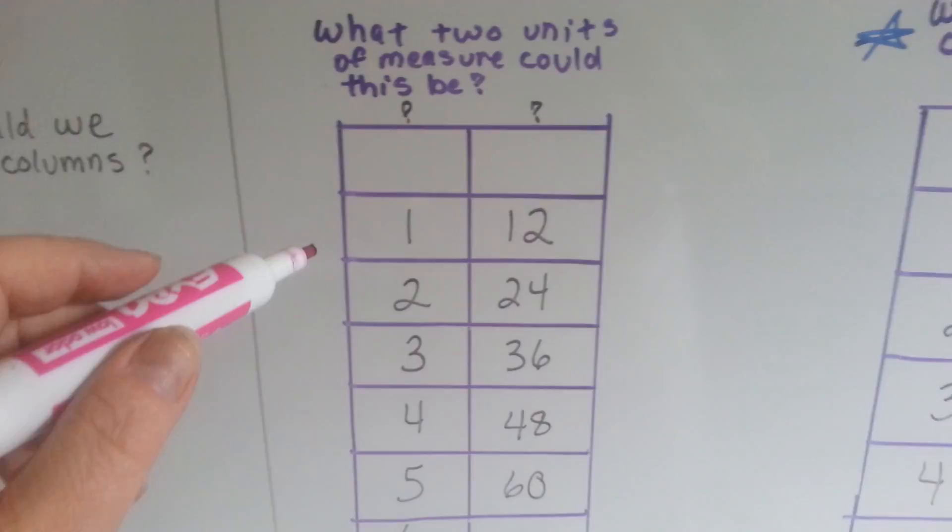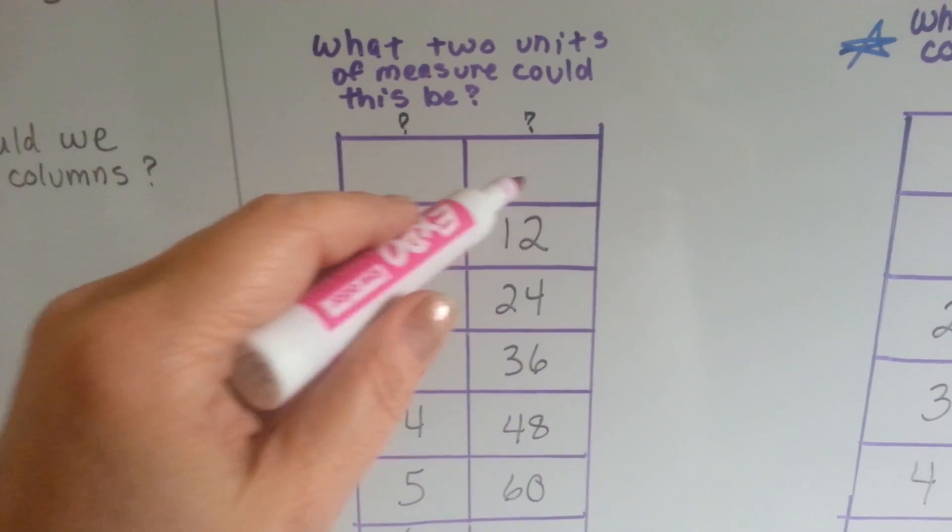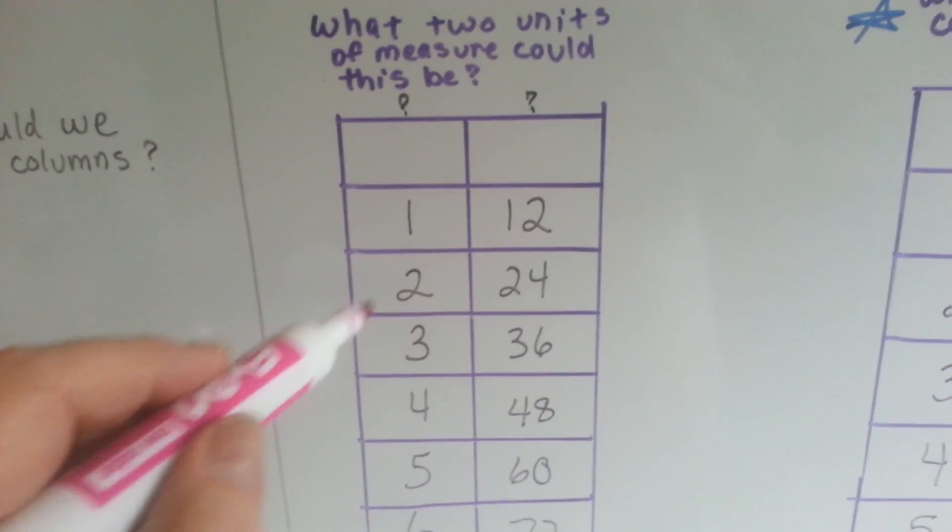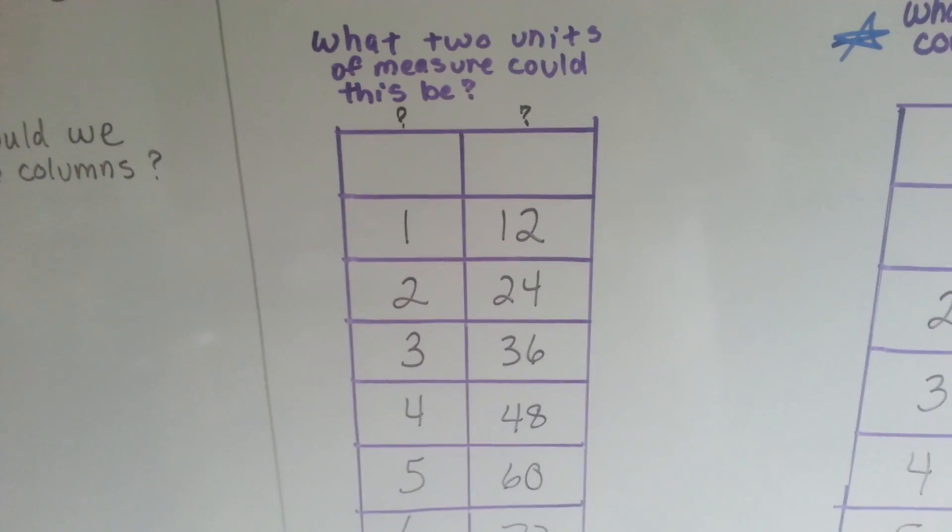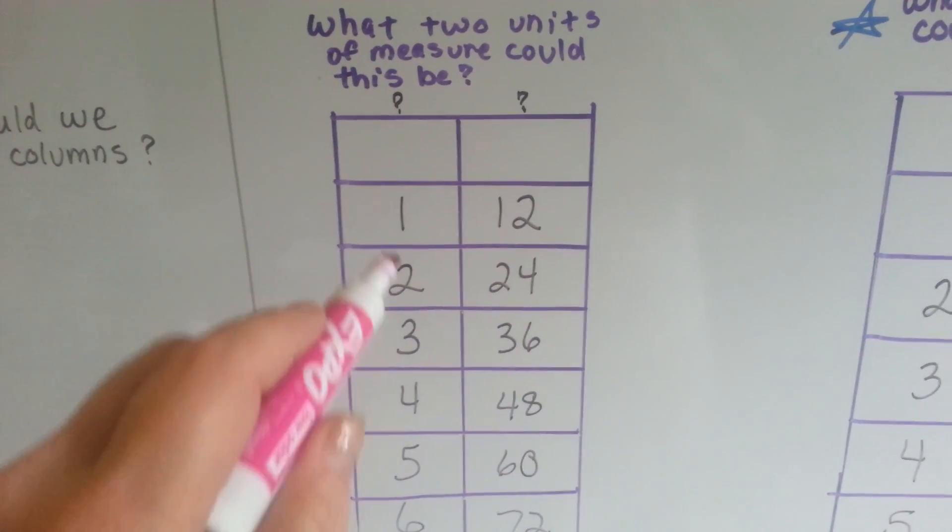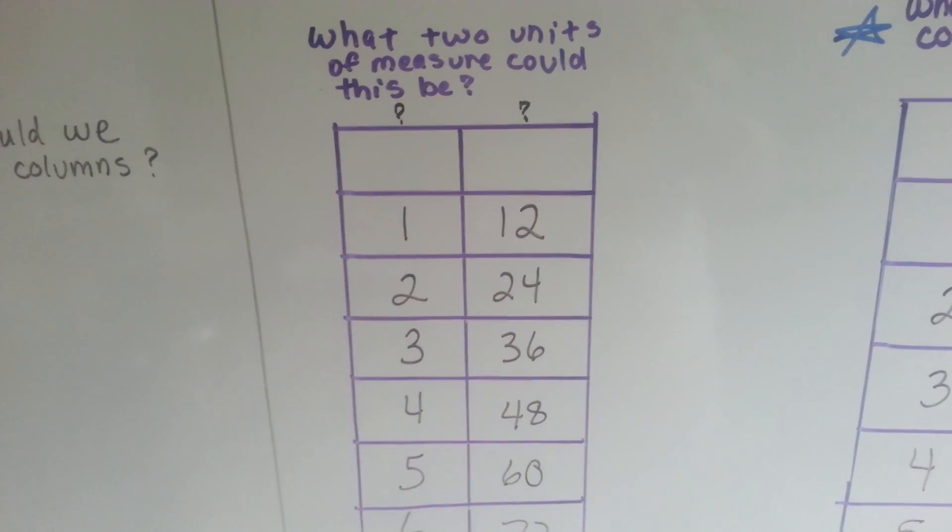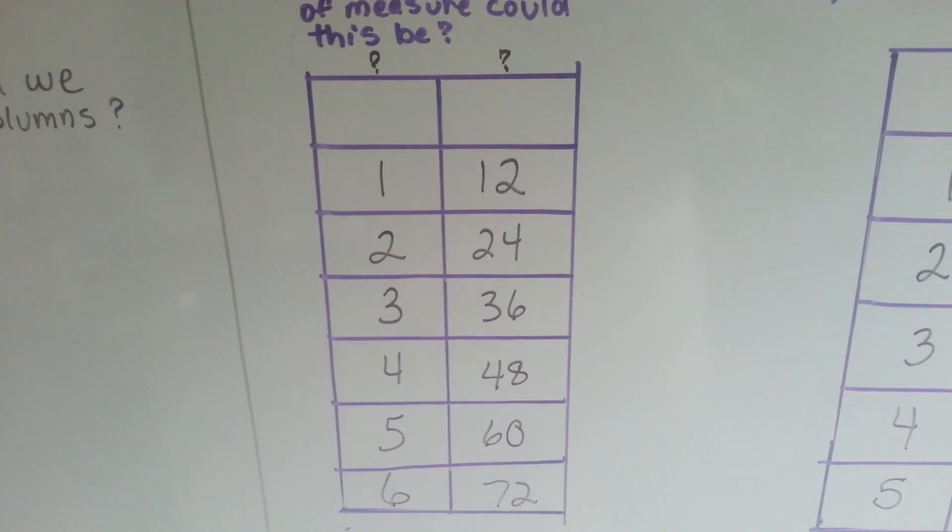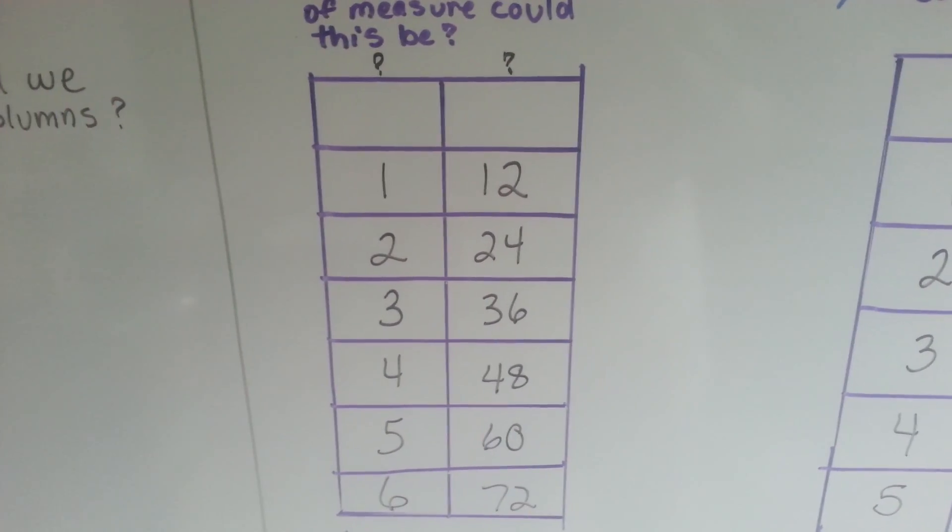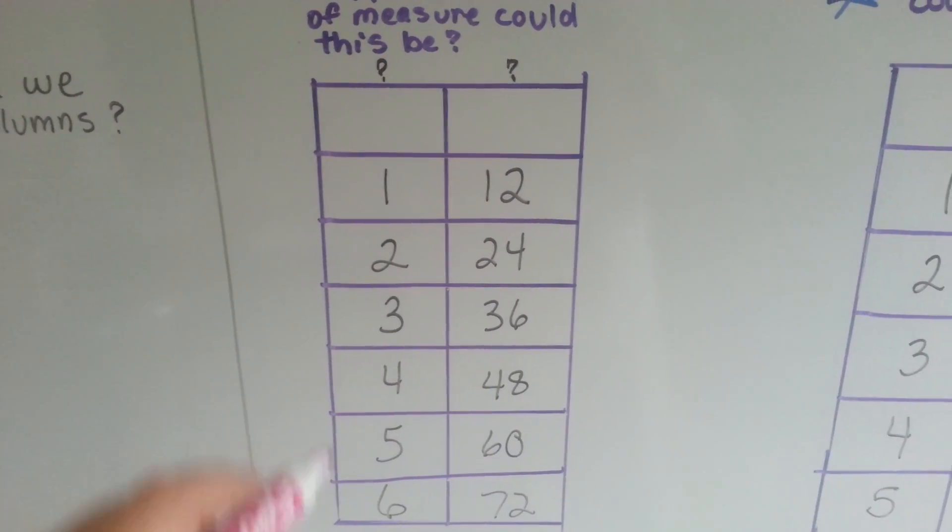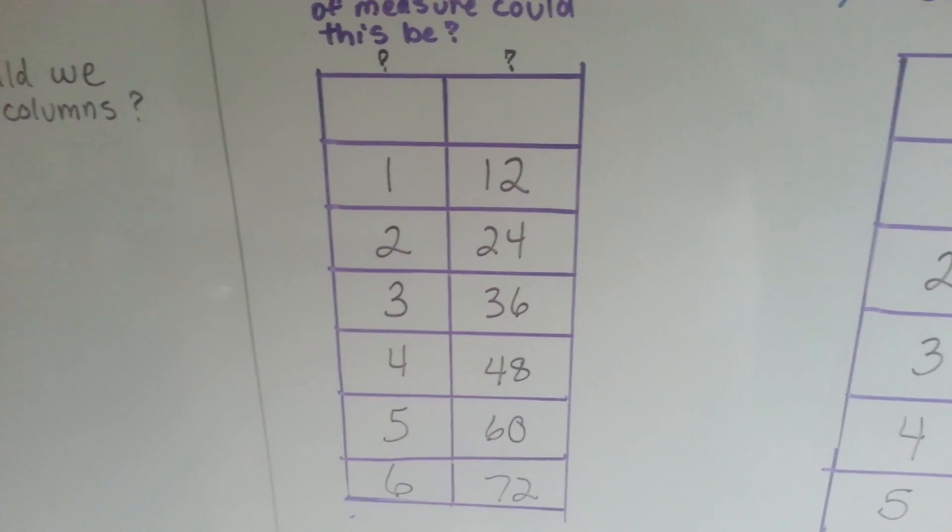What two units of measure could we put for these labels up here for these columns? One of them is equal to 12. So what measurement would be one that would be equal to 12? Can you think of anything? If you said one foot is 12 inches, you were right.